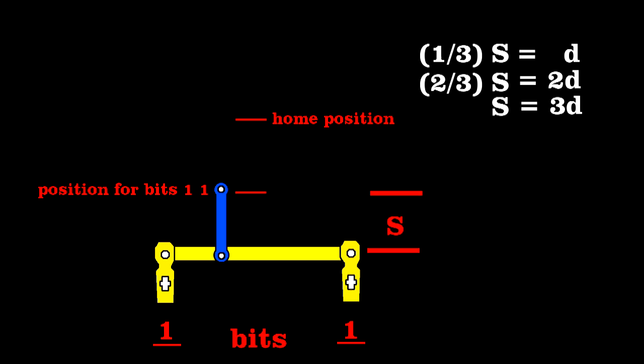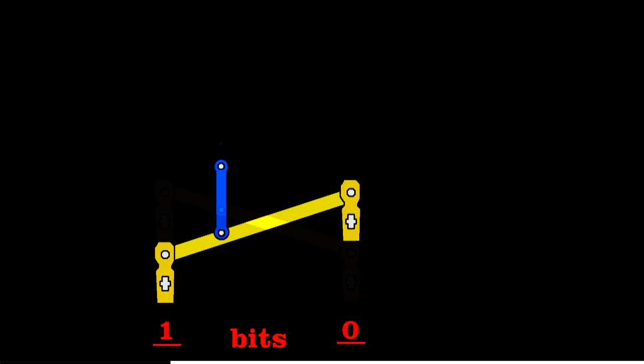So now you can see how we convert the binary impulse of the tabs, either nothing or a pull of length s, to a regular motion of the blue bar in steps of distance d.